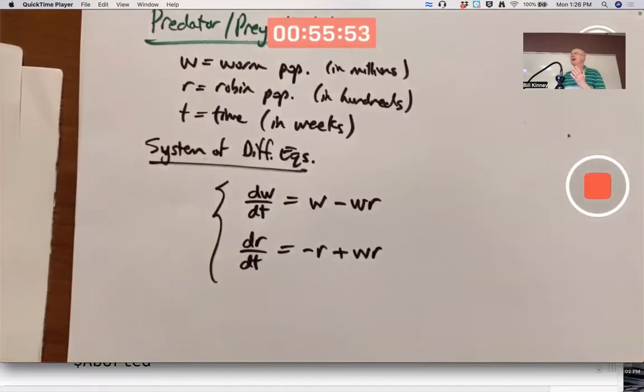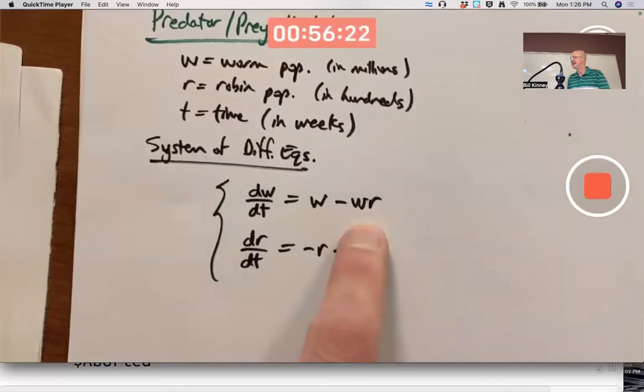What is our goal? Our goal is to figure out how the worm and robin populations change over time. It's very difficult to try to reach it symbolically. If you plug these into dsolve, even though they look fairly simple, it doesn't work. Can't be done. There's a non-linearity in both of those right-hand sides, and that non-linearity makes it difficult.